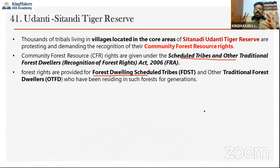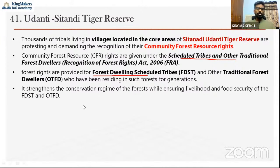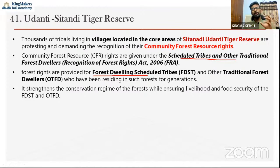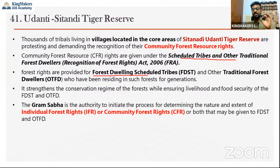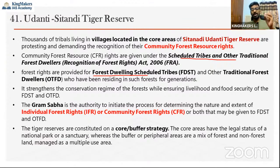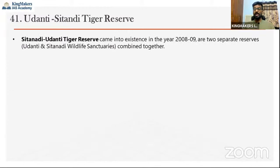Community forest resource rights allow a community to enter the forest and take certain minor forest produce like honey, and do small tree cutting. This strengthens the conservation regime while ensuring livelihood and food security of forest-dwelling scheduled tribes and traditional forest dwellers. The Gram Sabha is the initial authority which provides these rights. The tribal people in this tiger reserve are asking for these rights under the Scheduled Tribes and Other Traditional Forest Dwellers (Recognition of Forest Rights) Act, 2006.